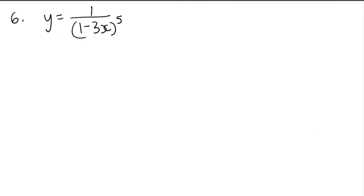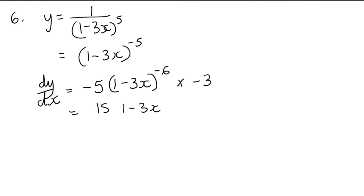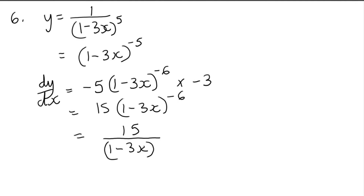Question 6: y equals 1 over (1 minus 3x) to the power of 5. We bring that up so it becomes (1 minus 3x) to the power of negative 5. Now differentiate: multiply the negative 5 down, keep the bracket the same, lower the power by 1 to get negative 6, then multiply by the bracket differentiated which is negative 3. Tidying up gives 15 times (1 minus 3x) to the power of negative 6. Writing it with a positive power: 15 over (1 minus 3x) to the power of 6.